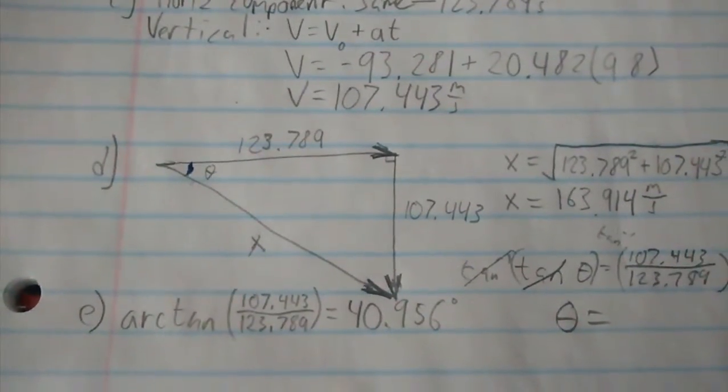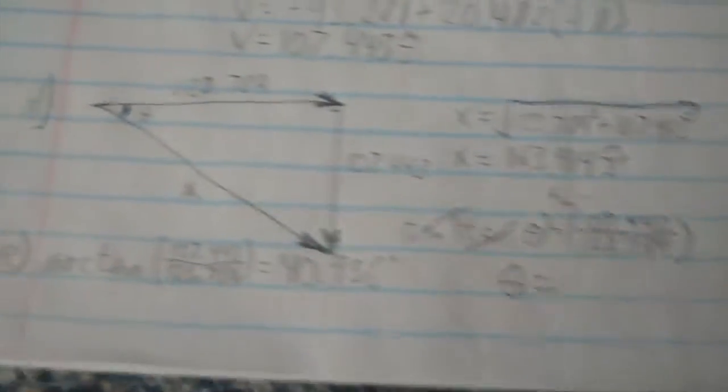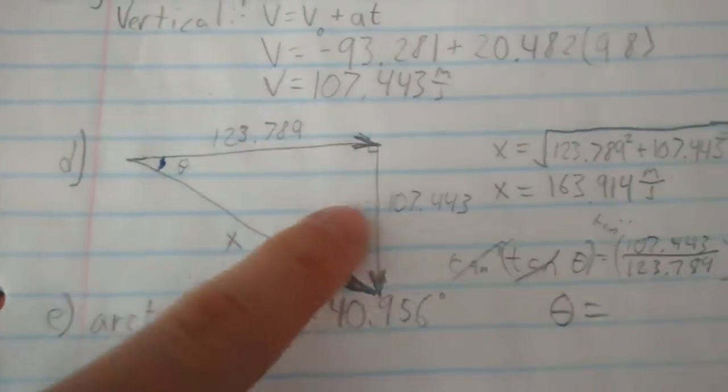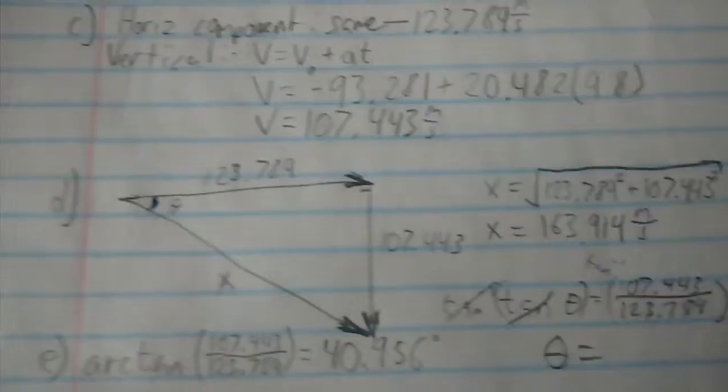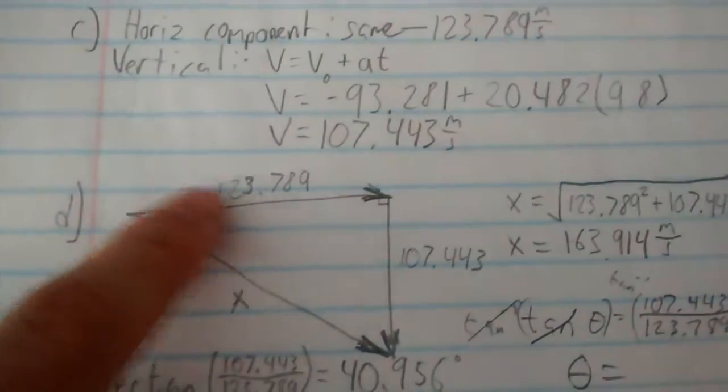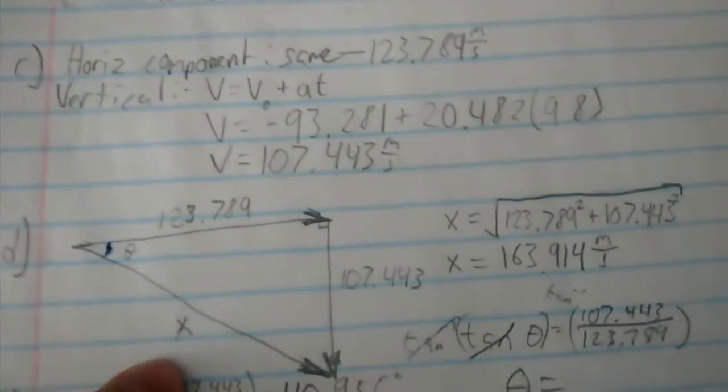And all we do, we use Pythagorean's theorem. So if we have x as a hypotenuse, and we have our two sides, we say that a squared plus b squared equals c squared.